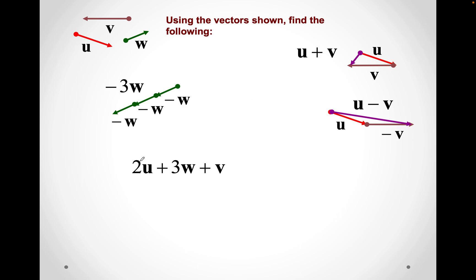You can get more complex. You can say 2U, 3W, and V. So we'll just draw all of the arrows together. There's my 2U, there's my 3Ws, and there is my V. And then the result looks something like that.